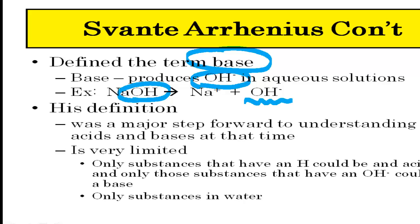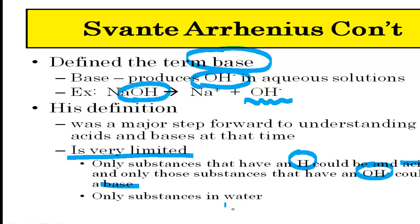The Arrhenius definition was a major step in understanding acids and bases, but it is very limited. The key limitation is that only H⁺ can be an acid and only OH⁻ can be a base, and these substances must be in water. So the Arrhenius definition is very narrow.